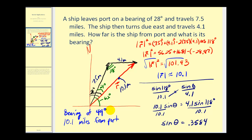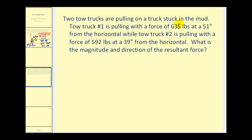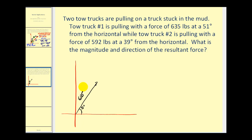Let's take a look at one more problem. Two tow trucks are pulling on a truck stuck in the mud. Tow truck one is pulling with a force of 635 pounds at a 51 degree angle from the horizontal, while tow truck two is pulling with a force of 592 pounds at 39 degrees from the horizontal. What is the magnitude and direction of the resultant force? Let's sketch these position vectors and add them together.